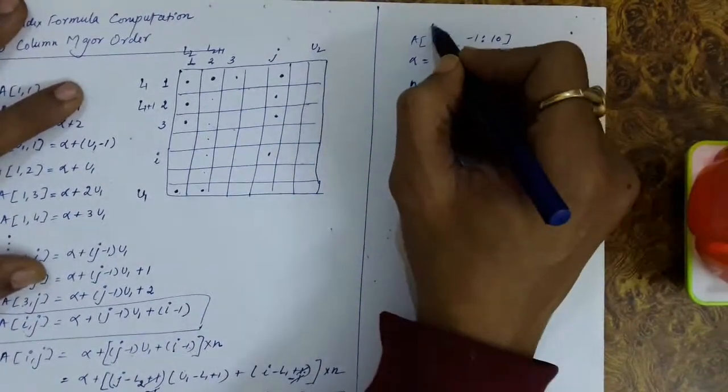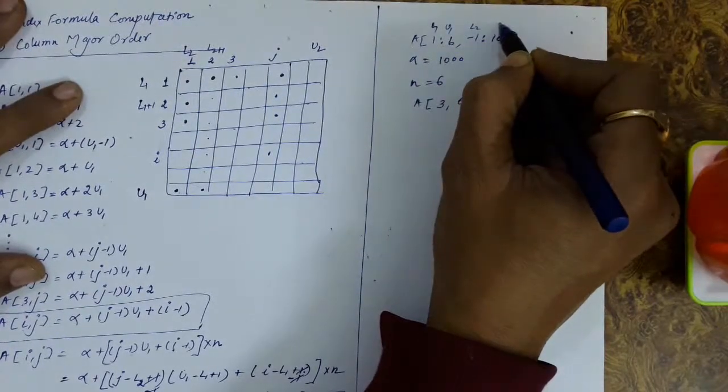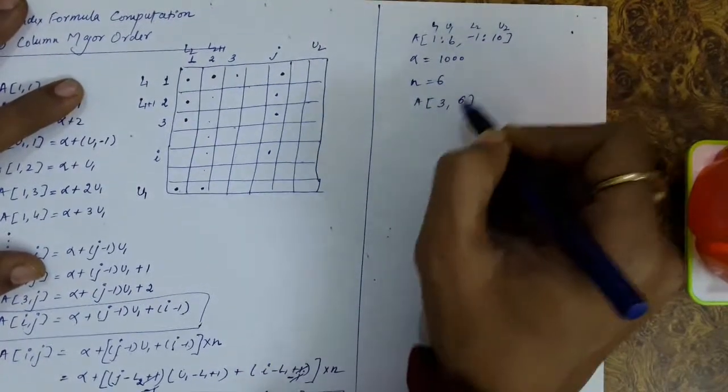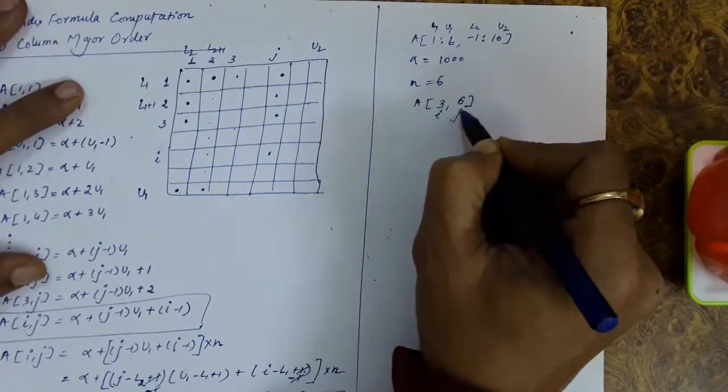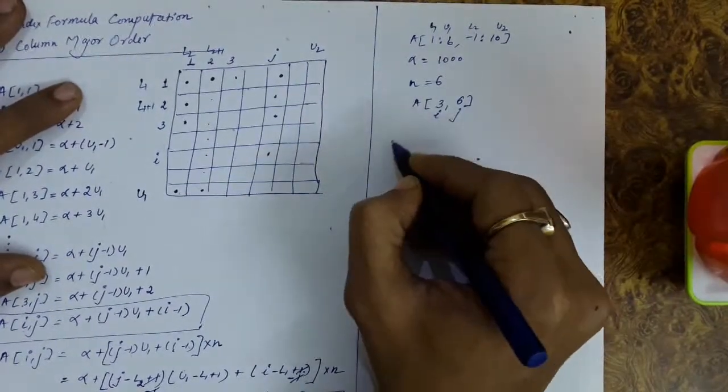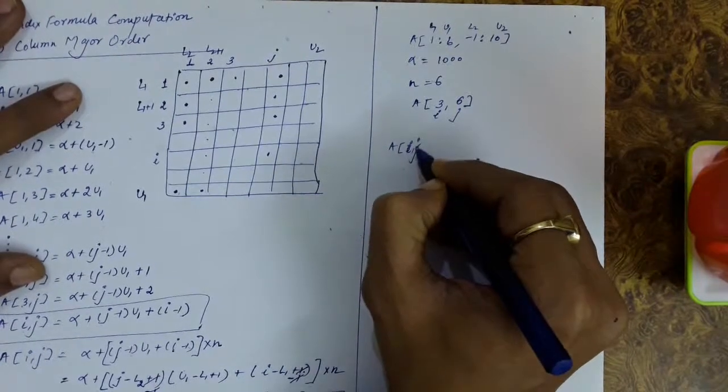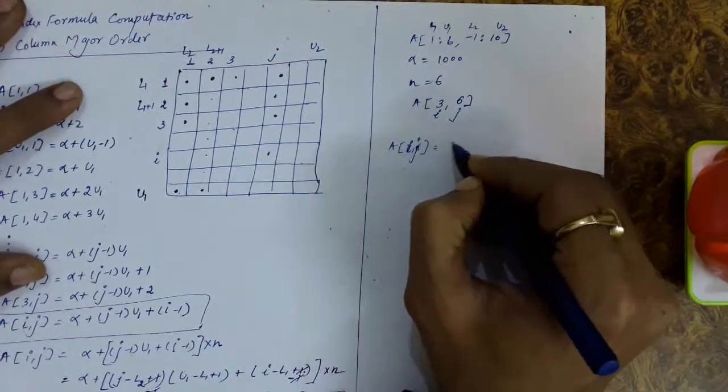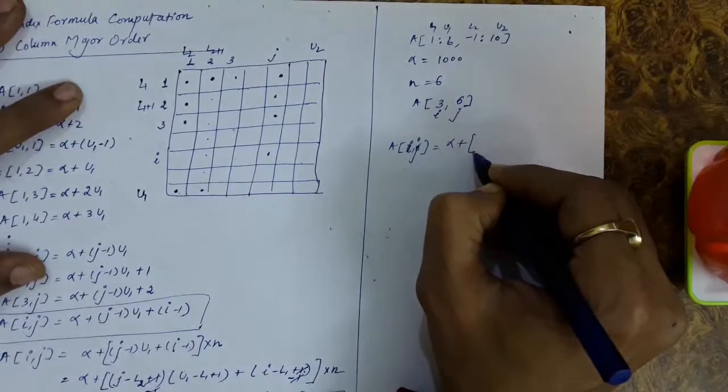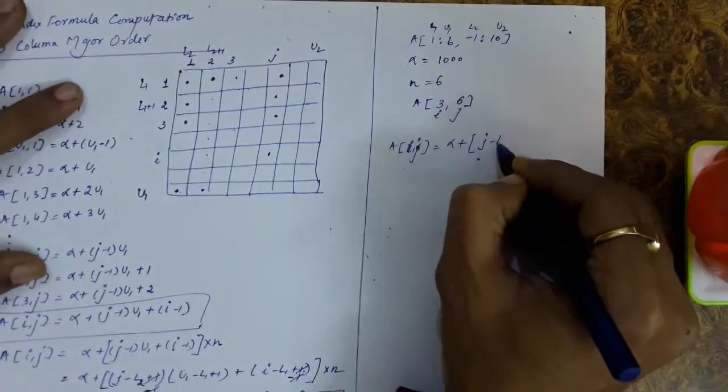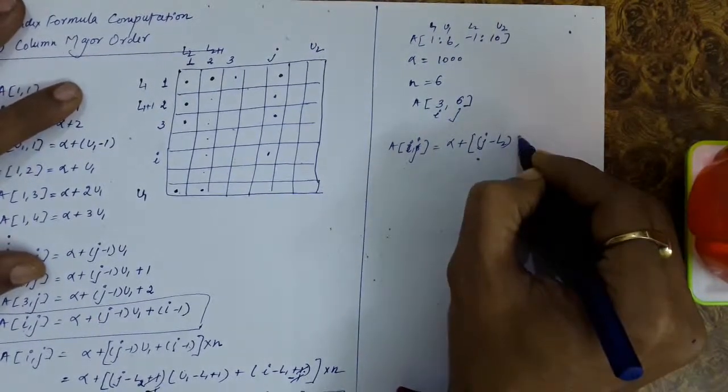So this is l1 and this is u1, this is l2 and this is u2, this is i and this is j. And address of a[i,j] with a formula is alpha plus (j minus l2) into